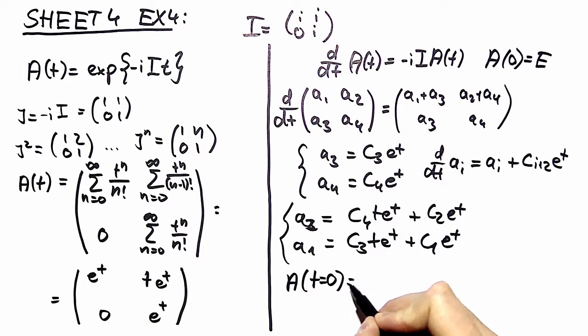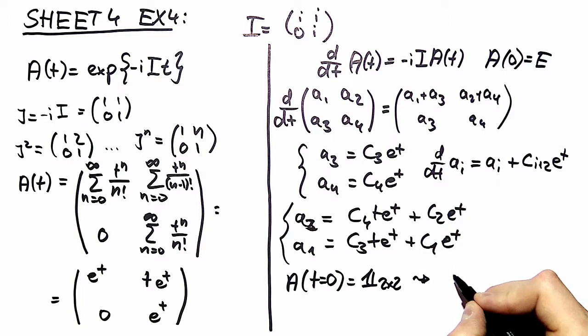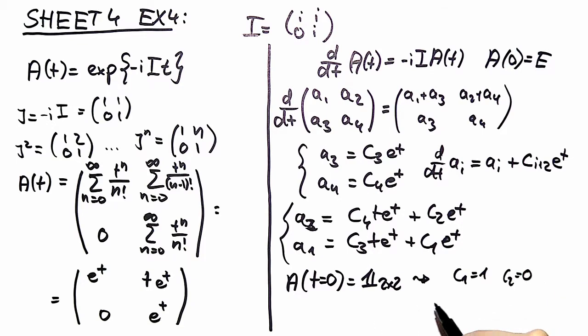And now we can try to spot that. Well to have here a 1 you have to have c1 equal to 1 and c2 equal to 0 and to have a 1 over here you have to have, let's see, c4 equal to 1 and c3 equal to 0. So that leaves us with the same matrix as we obtained over here which is just as we expected.